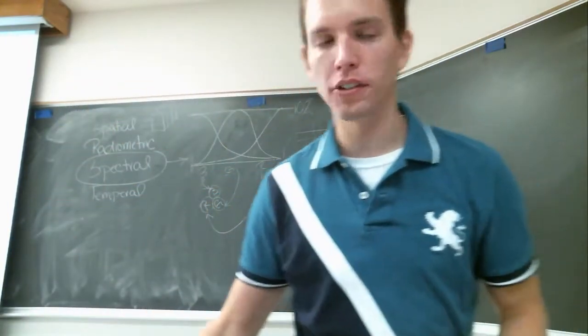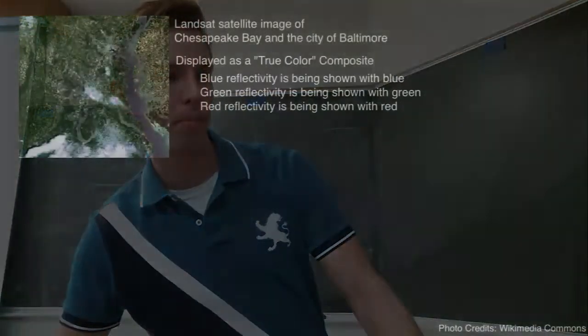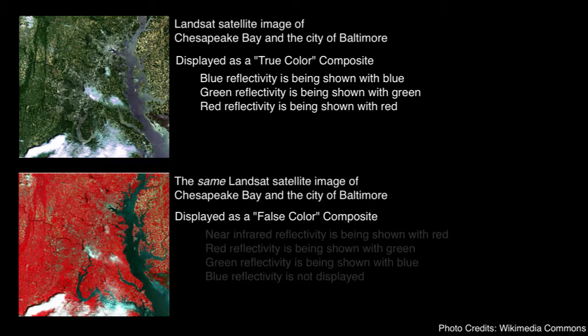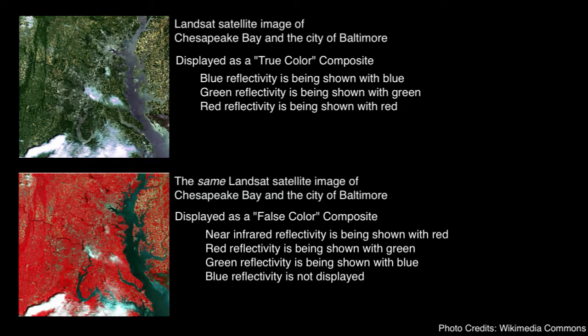This is a pretty common way to display a remote sensing image. This is the same remote sensing image, but displayed as what's called a false color composite. We have not taken the bands directly from blue to blue, green to green, red to red. This is a very common color gun assignment, and the caption tells you what's happened: this is a false color image using the near-infrared, red, and green spectral bands mapped to RGB.